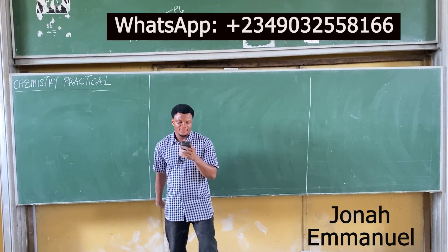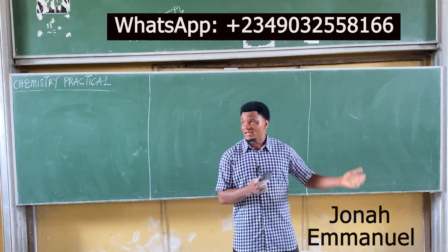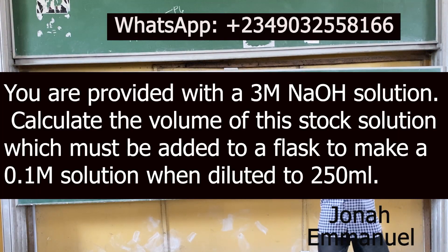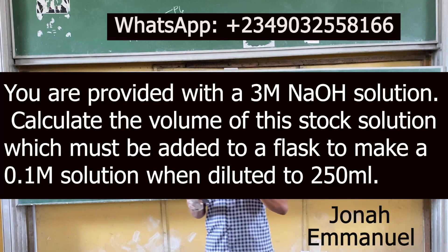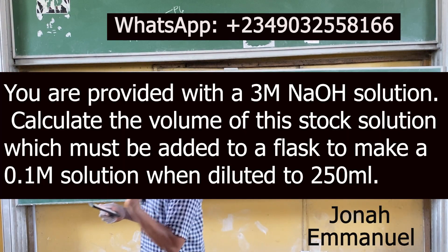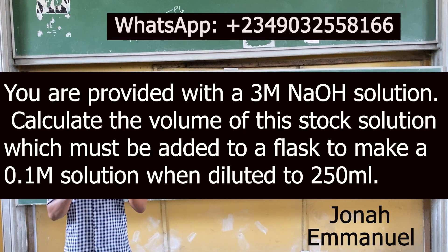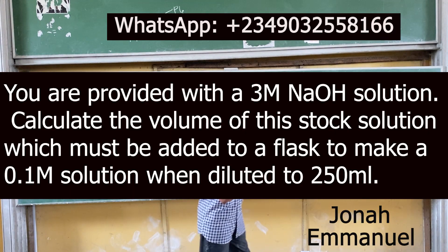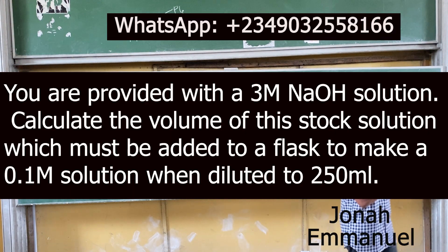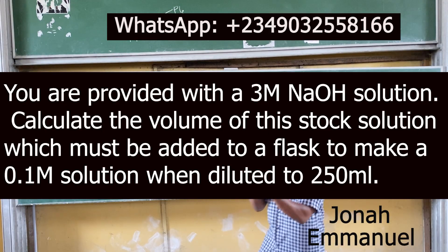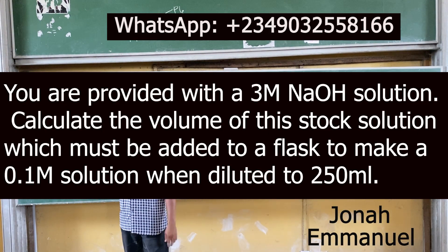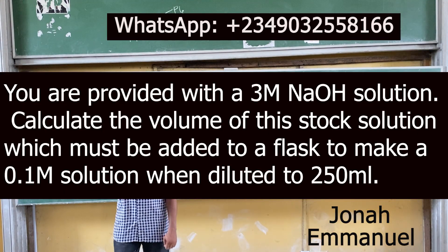Sample question under molarity: You are provided with a 3 molar (3 M) NaOH sodium hydroxide solution. Calculate the volume of this stock solution which must be added to a flask to make a 0.1 molar solution when diluted to 250 milliliters.